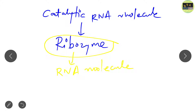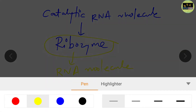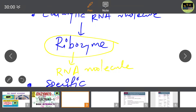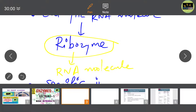So the first important point is: most enzymes are proteins but not all. The second important point regarding enzyme is that enzyme is highly specific in nature. We will see why enzyme is highly specific and how it becomes specific. Just note down for now that it is very specific in nature.